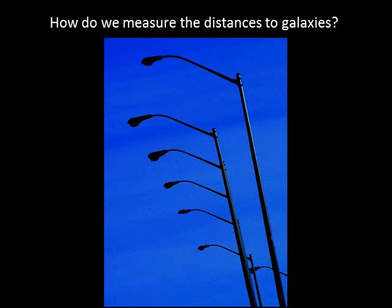Once we have measured distances to nearby stars using parallax, we can begin to measure distances to other stars in the same way that we might estimate the distance to a street lamp at night. If the street lamp does not look very bright, it's probably far away; if it looks bright, it's probably close. We can measure the apparent brightness of a street lamp, and if we know how intrinsically bright each lamp is — say, 1,000 watts — we can use the inverse square law to calculate the distance.